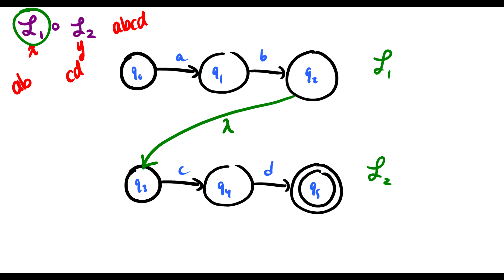L1 concatenate L2 should read ABCD. First it reads AB, gets to the old final state, then reads the empty string, then reads C and D, and ends up in the final state and accepts it. To do the concatenation, we take all of the final states in the first language, get rid of them, and send them to the start state of the second language with the empty string.